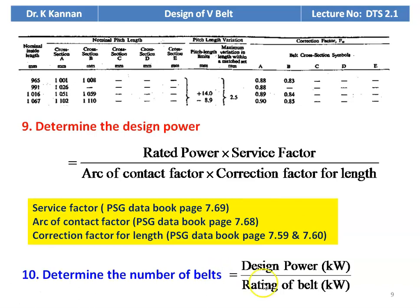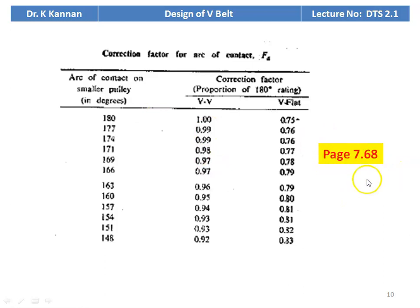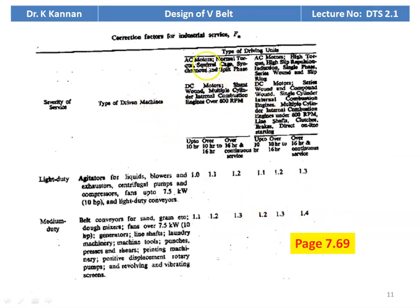Then calculate the number of belts: number of belts = design power (kW) / rating of the belt (kW). Both design power and belt rating have already been calculated, so use those values. Page 7.68 gives the correction factor for angle of contact, and page 7.69 gives the service factor for industrial service with light duty, medium duty, and heavy duty types.